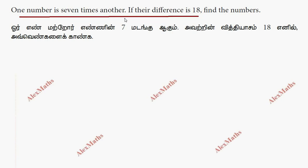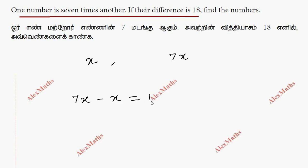One number is x. Another number is 7 times the other. The difference is 7x minus x, this is 18.